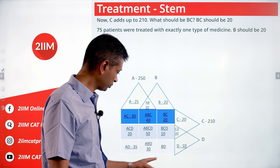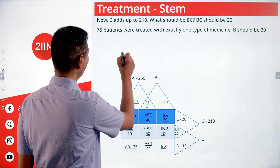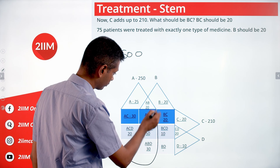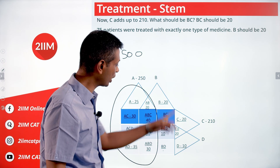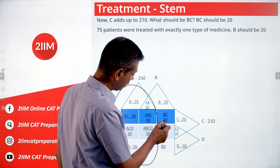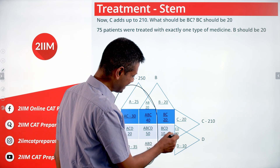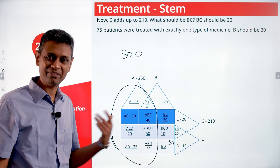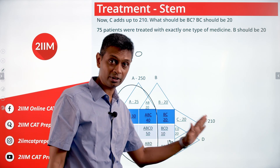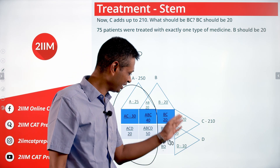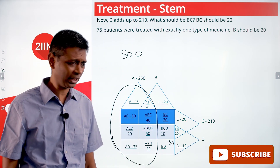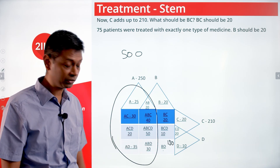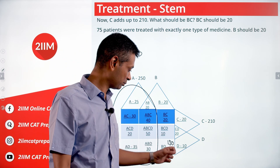Almost all regions are now filled — only B∩D only remains. Since the overall total is 500 and A totals 250, the non-A regions must sum to 250. Adding all known non-A regions: 20 + 20 + 20 + 10 + 20 + 10 = 100. So B∩D only = 150. This is surprisingly large compared to all other values (10–50 range), so it warranted a double-check — but it is indeed 150.